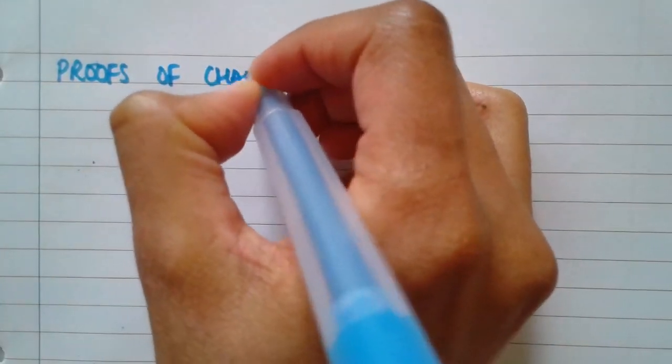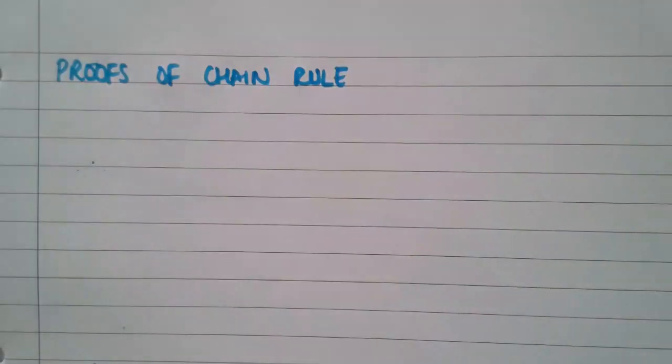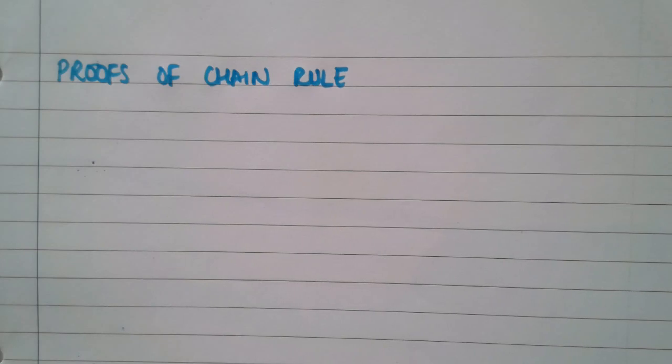Hello Year 12s. Today we are looking at proofs of differentiation with chain rule, product rule, and quotient rule. The previous video looked at the basic introduction to differentiation from first principles, and I'm hoping that's given you a bit of review and recap building upon your knowledge from last year.